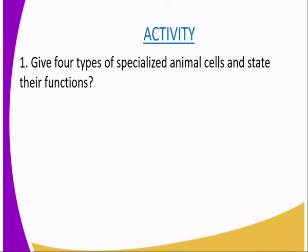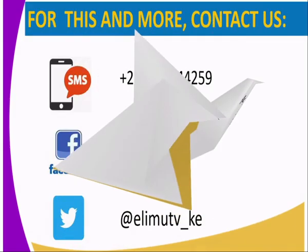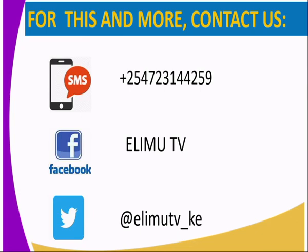Having covered those specialized animal cells, we have the following activity to undertake. For further reference on specialized animal cells, you can refer to KLB Secondary Biology Students Book One, fourth edition, Nairobi, Kenya Literature Bureau. For more information, you can contact us via SMS through the number on our screen, or through our Facebook page at Elimutv, or via Twitter at Elimutv underscore Kenya. Welcome and thank you for watching.